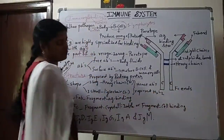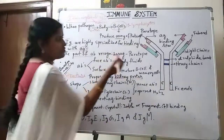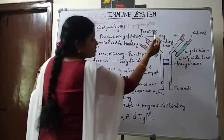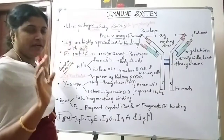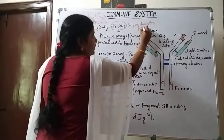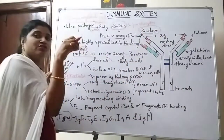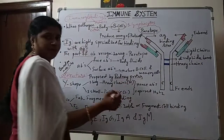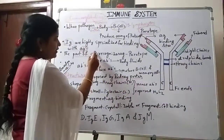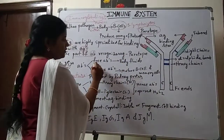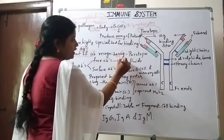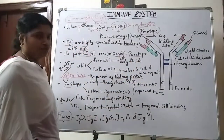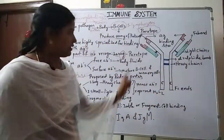This is the immunoglobulin structure. In this structure, the part responsible for binding with the antigen — see the red colour — this part is responsible for antigen binding, and it is known as paratope. The part of the antibody that recognizes and binds with the antigens is known as paratope. These red colour structures are paratopes.